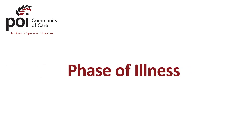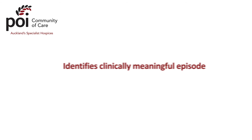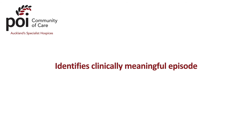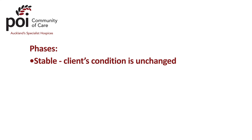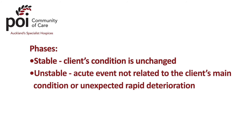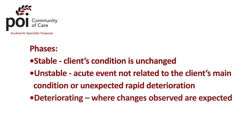Phase of Illness identifies a clinically meaningful episode in a patient's illness. The phases are: Stable — the client's condition is unchanged. Unstable — acute events not related to the client's main condition, such as a fall, infection or other complications, and also when deterioration is considerably more rapid than expected. Deteriorating — when changes observed are expected. Or Dying — the terminal phase of life.